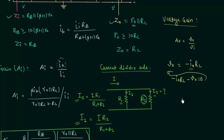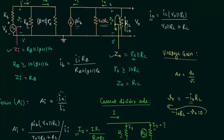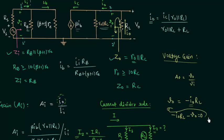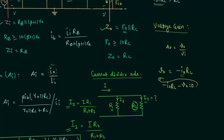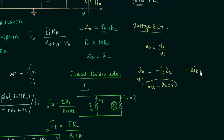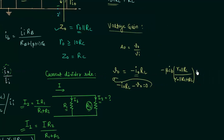The output current I_O was already calculated in the last lecture. Using the current divider rule, the output current equals the total current I_C multiplied by the other resistance R_O parallel R_C, divided by R_O parallel R_C plus R_L. Since I_C equals beta times I_B, the output voltage becomes minus beta I_B times the quantity R_O parallel R_C divided by R_O parallel R_C plus R_L, all multiplied by the load resistance R_L.